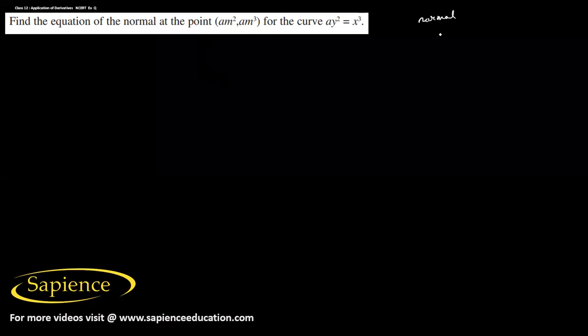Here we have to find the equation of the normal at the point (am², am³) for the curve ay² = x³. First, we have to find the slope of the normal.